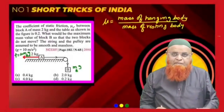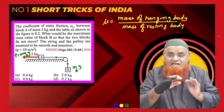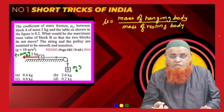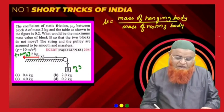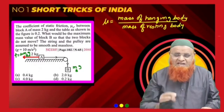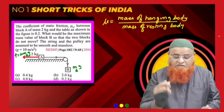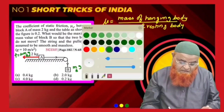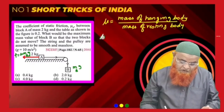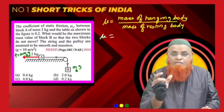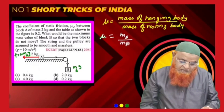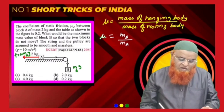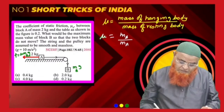Whenever these types of problems come where one body is resting on the table and one body is hanging downwards, and there is friction on the resting body, you need to apply a simple logic. To find out the coefficient of friction, mu is equal to the mass of the hanging body divided by the mass of the resting body — MB divided by MA.